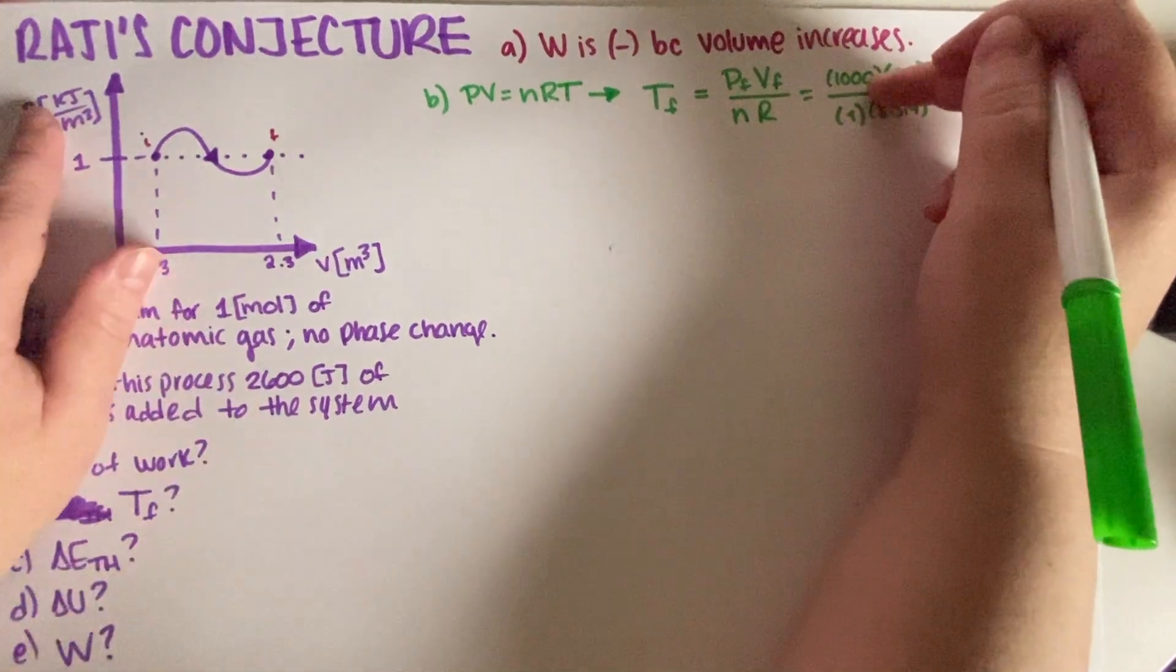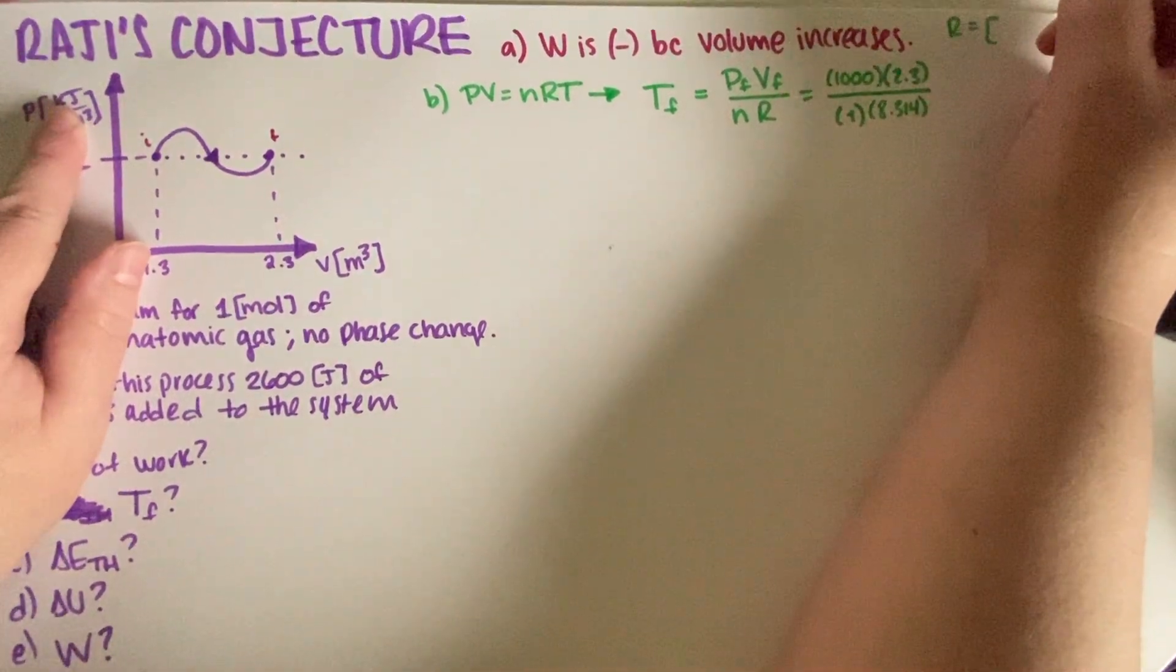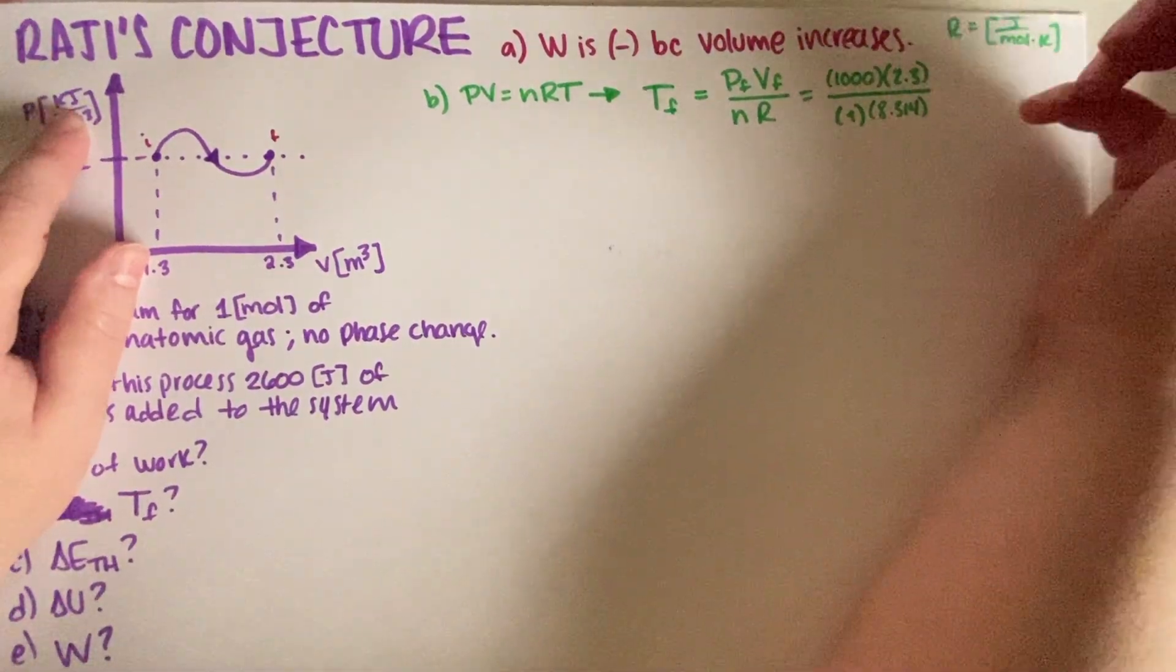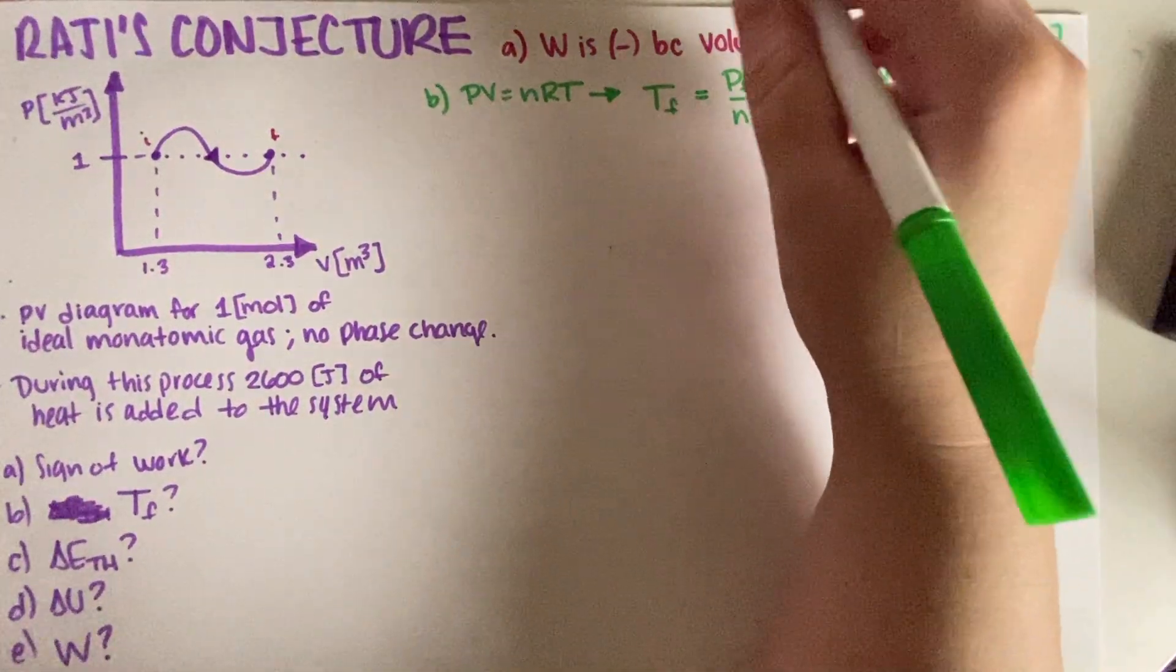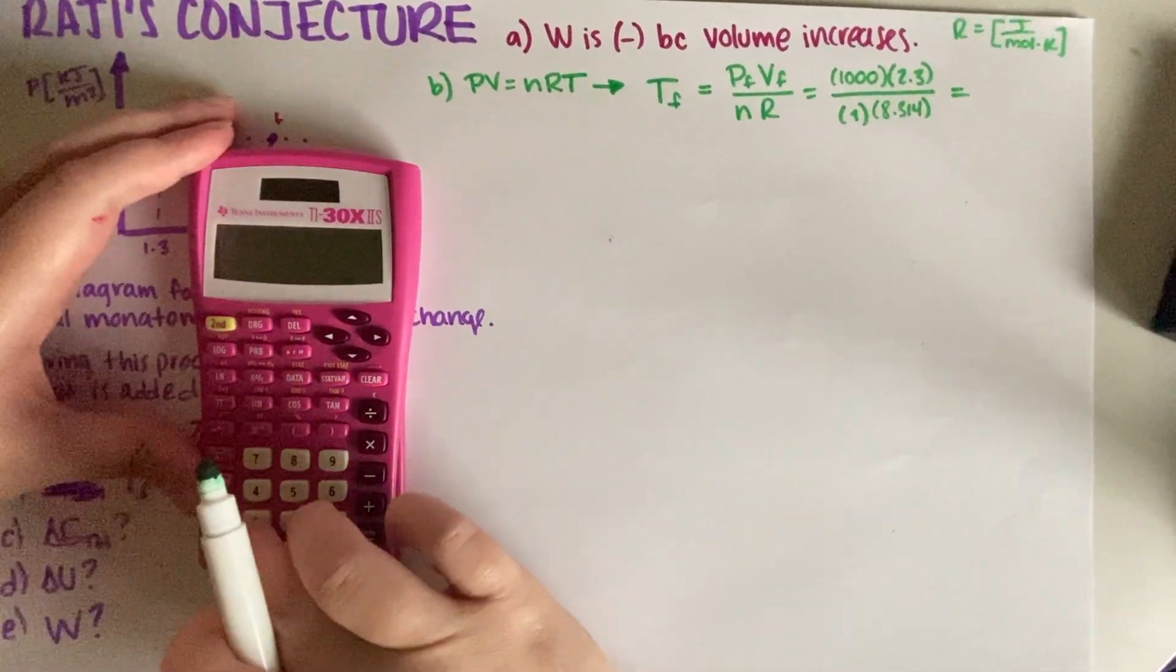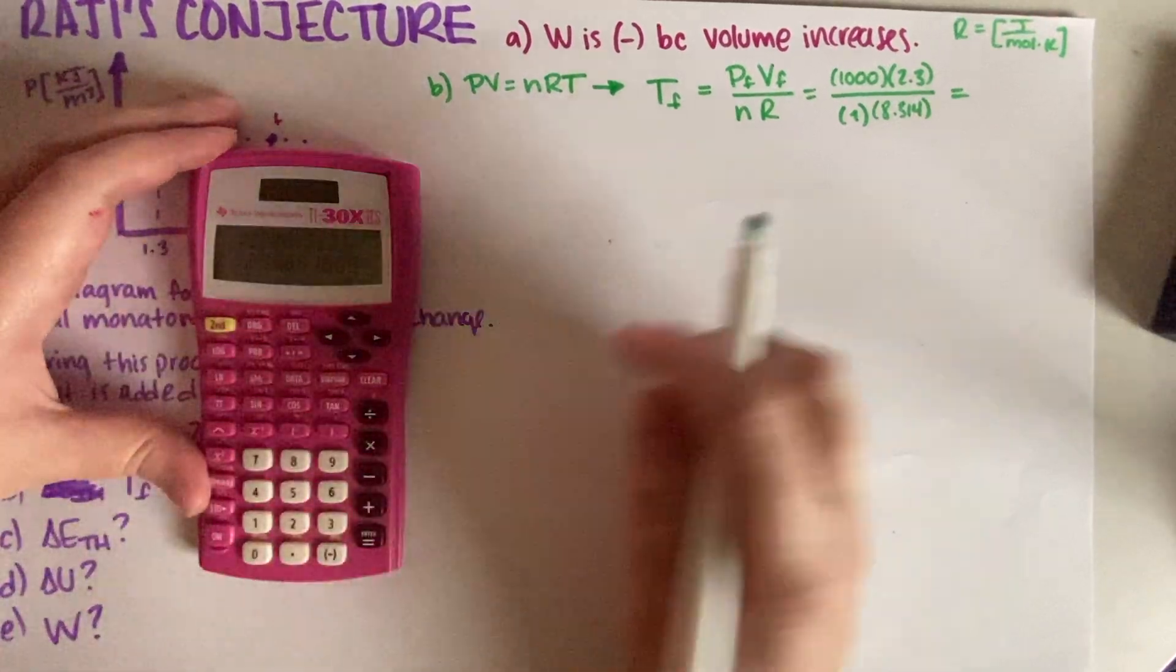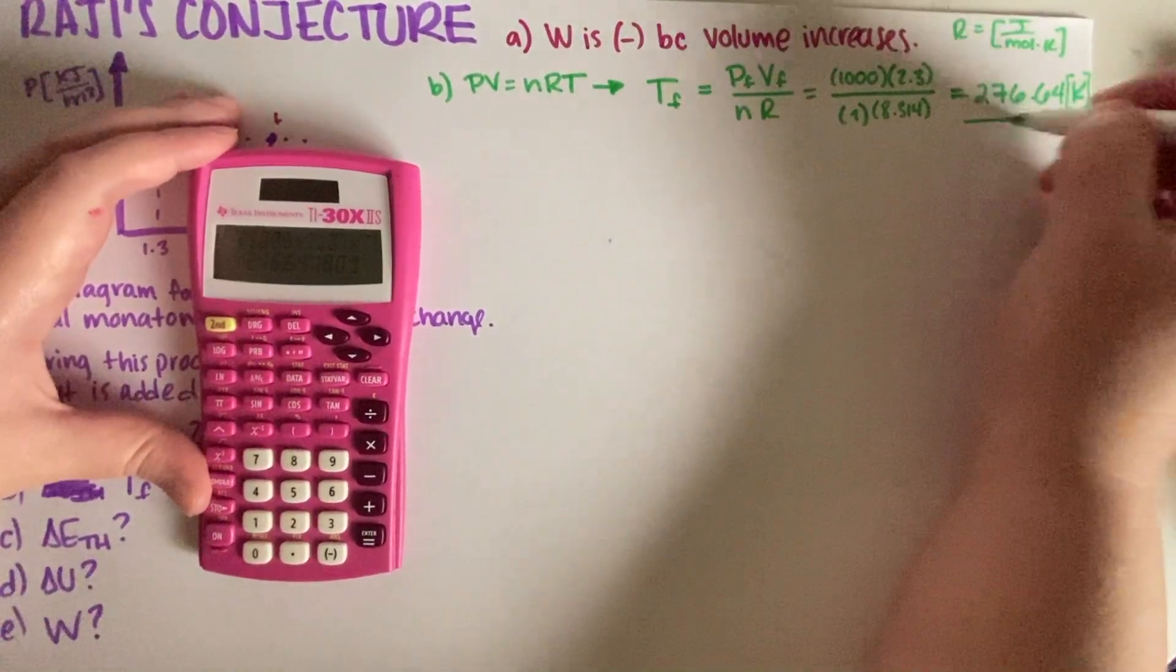And then R is 8.314. Please note that I had to change this into joules, because R, the units of R, is joules per mole kelvin. So, because this is joules, and you have to cancel the joules, this can't be kilojoules. So, that's the reason why I had to do that. So, T_f, final answer is, let's see, calculator time, 1,000 times 2.3, divided by 8.314. And that will be equal to 276.64 kelvins final answer.